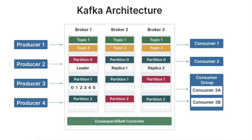Let's talk about Apache Kafka, which is a distributed event streaming platform designed to handle large volumes of real-time data efficiently. It's commonly used for building real-time data pipelines, messaging systems, and stream processing applications. Kafka's architecture is built for scalability, fault tolerance, and high-throughput data processing.